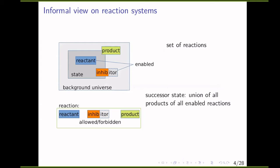A reaction system based on sets consists of a background universe or background set, highlighted here in gray, and a set of reactions. A reaction consists of a reactant, an inhibitor, and a product. Such a reaction is enabled on a state if the reactant and the allowed part of the inhibitor is inside the state, and the forbidden part of the inhibitor is not. The result of an enabled reaction is the product, and the successor state is the union of all products of enabled reactions.